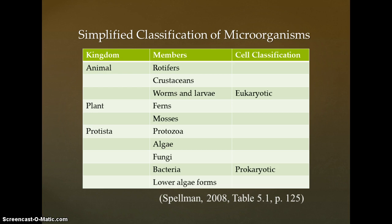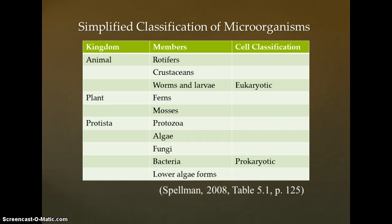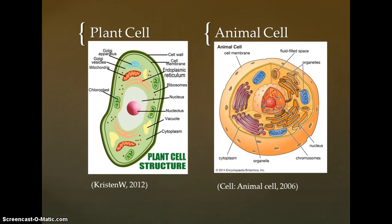In water science, classification of microorganisms can be simplified using three kingdoms: animal, plant, and protista, which includes the single-celled organisms. As Spellman (2008, p. 125) notes, an eukaryotic organism is characterized by a cellular organization that includes a well-defined nuclear membrane. The prokaryotes have structural organization that sets them off from other organisms — they are simple cells characterized by a nucleus lacking a limiting membrane, an endoplasmic reticulum, chloroplast, and mitochondria. They are remarkably adaptable, existing abundantly in the soil, the sea, and freshwater.